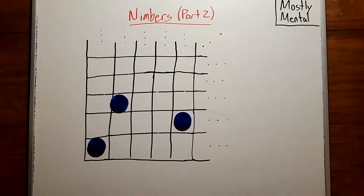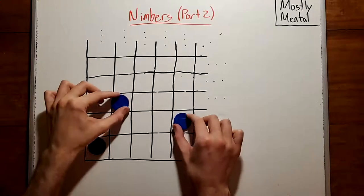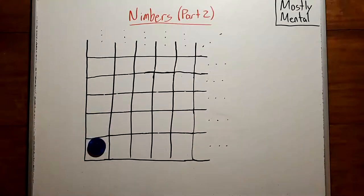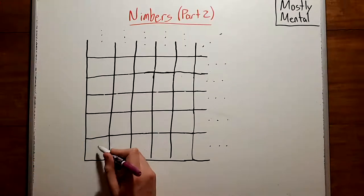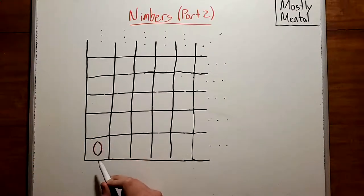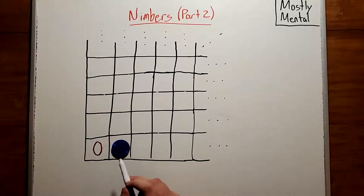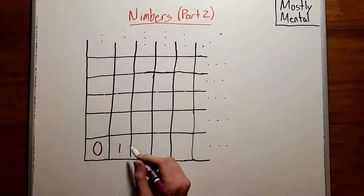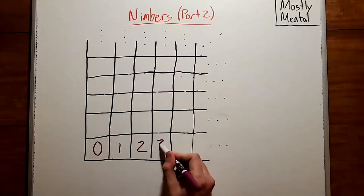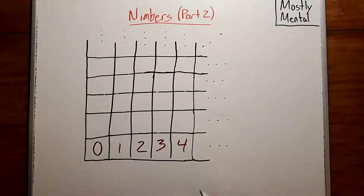What are the Sprague Grundy values for this game? As we've seen in previous games, that's the sum of the values for each individual coin, so we only need to look one coin at a time. If that coin is in the bottom left, there's nowhere for it to go. It can't move left, and it can't move down. So there's no legal move, and the Sprague Grundy value is 0. And if the coin is here, the only move you can make is to this position with value 0, so this has value 1.